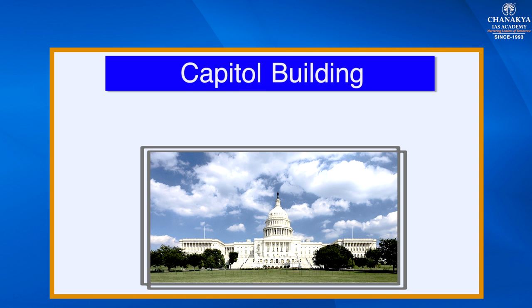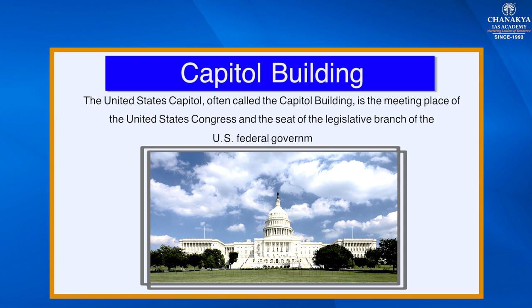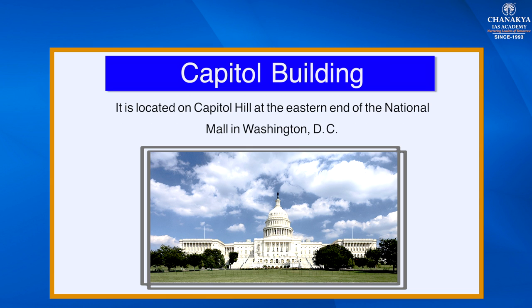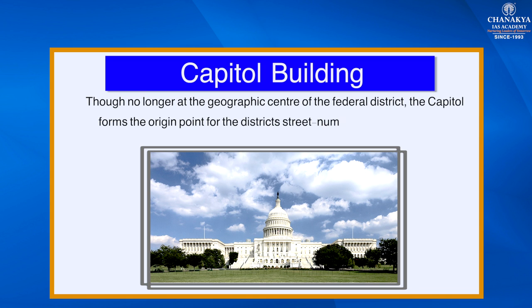The Capitol building is often called the United States Capitol, which houses the United States Congress and the seat of the legislative branch of the U.S. federal government. It is located on Capitol Hill at the eastern end of the National Mall in Washington, D.C. Though no longer at the geographic center of the federal district, the Capitol formed the origin point for the district's street numbering system and the district's four quadrants.